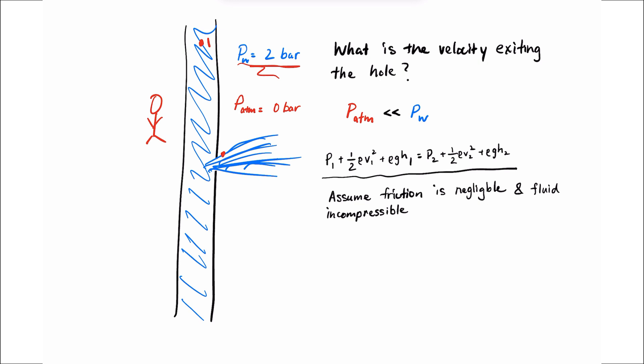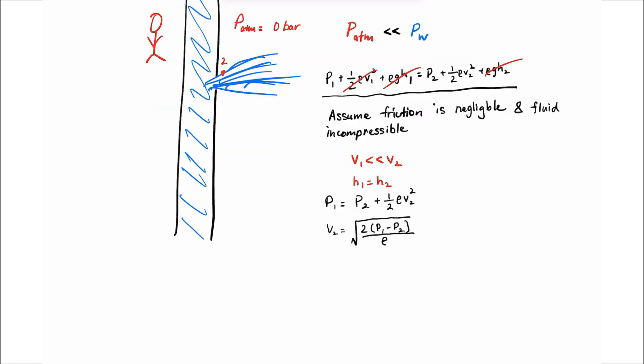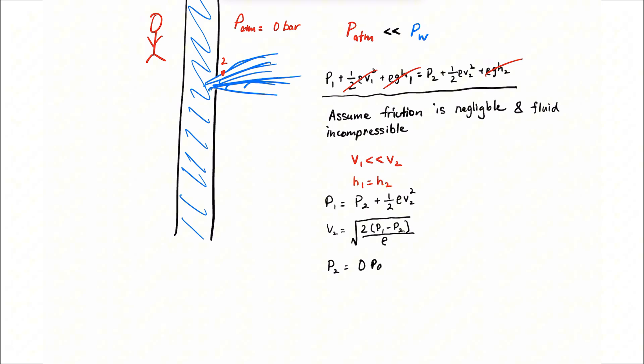The heights at points one and two are the same, so the gravitational terms can be neglected. That leaves us with p1 equals p2 plus one half rho v2 squared. Rearranging this equation and plugging in the numbers we know, p2 is just atmospheric pressure or zero gauge pressure, and water density is 1000 kilograms per meter cubed.